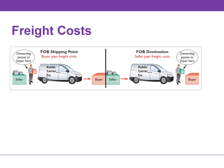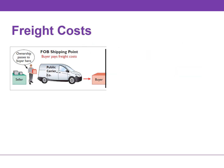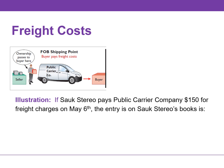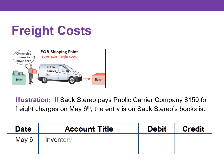If the terms are FOB shipping point, the buyer pays the freight cost. If the terms are FOB destination, the seller pays the freight cost. If the buyer pays the freight cost, these costs are considered part of the cost of purchasing inventory. For example, if Salk Stereo, the buyer, pays a public carrier company $150 for freight charges, they would debit or increase inventory and credit or decrease cash.